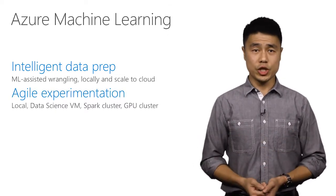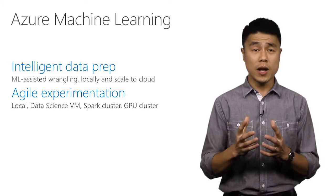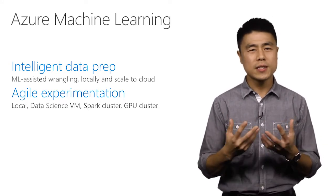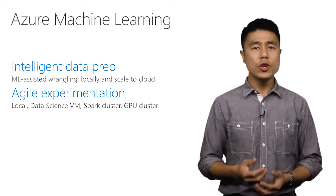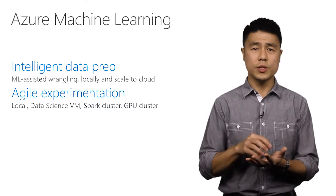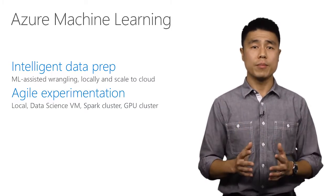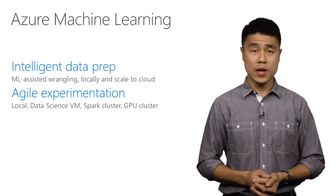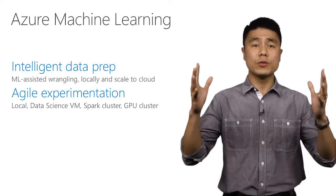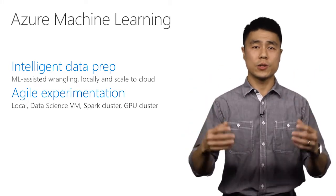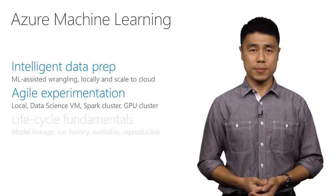Agile experimentation enables you to train your model using the compute context that makes the most sense. For example, you may want to iterate quickly on your local machine, or if you want more RAM, you can scale up to a data science VM on Azure. You can scale out to a Spark cluster or even a GPU cluster to run your training jobs.